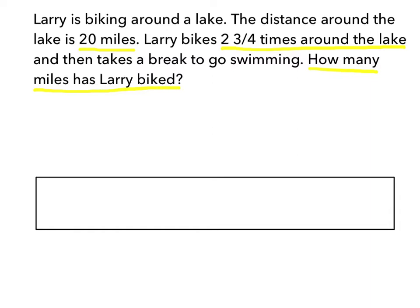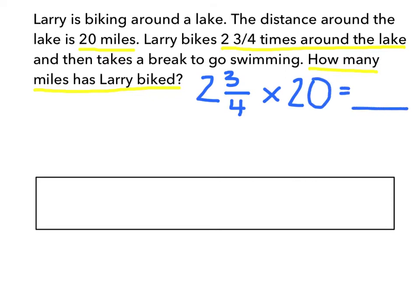One way to write that is 2 and 3 fourths times 20, and that shows he biked 2 and 3 fourths groups of 20.